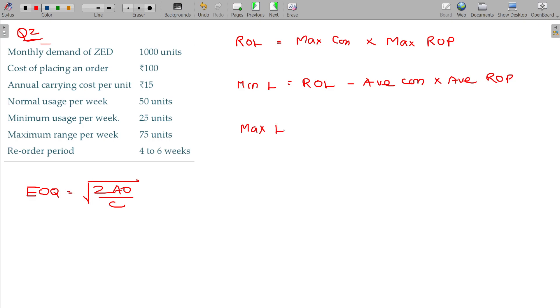Maximum level: reorder level plus reorder quantity or EOQ minus minimum consumption into minimum reorder period.